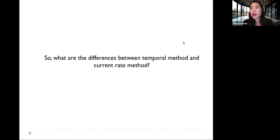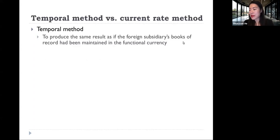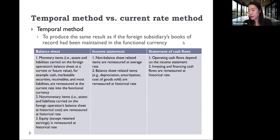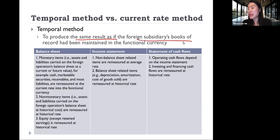We've just talked about when to use the temporal method and when to use the currency rate method. Now let's look at what the differences are between these two methods. First, let's look at the temporal method. The purpose of the temporal method is to produce the same result as if the foreign subsidiary's books of record have been maintained in the functional currency.